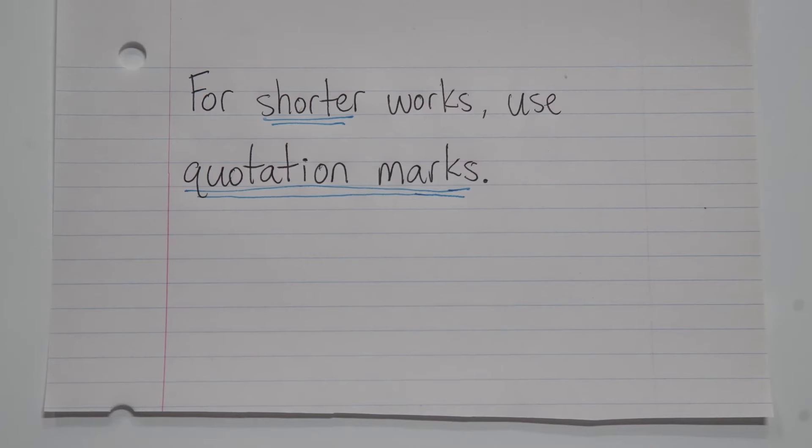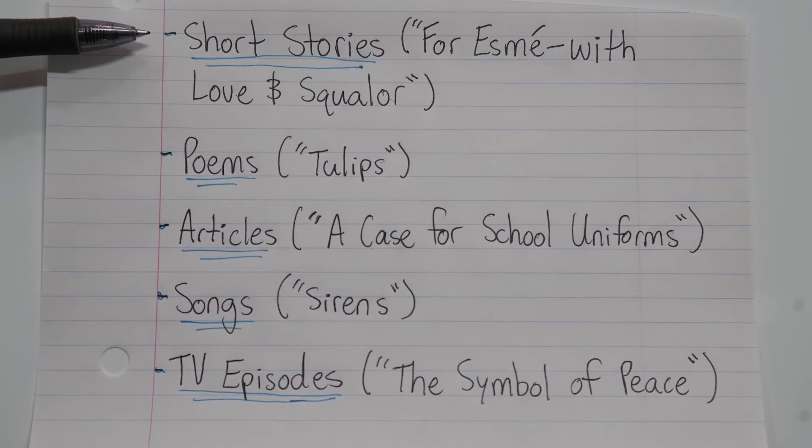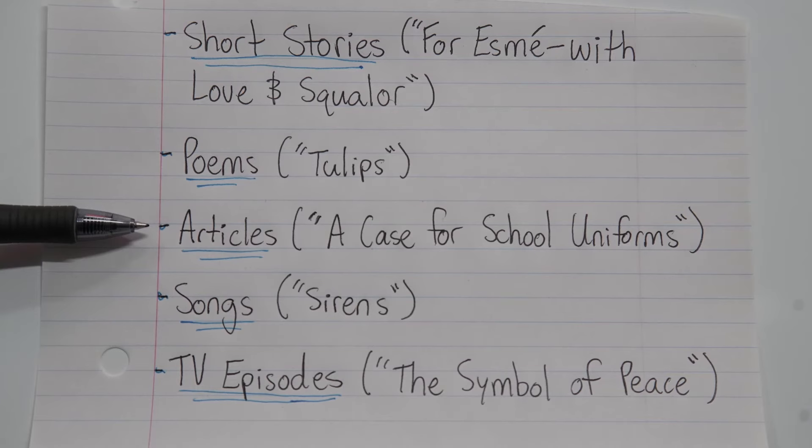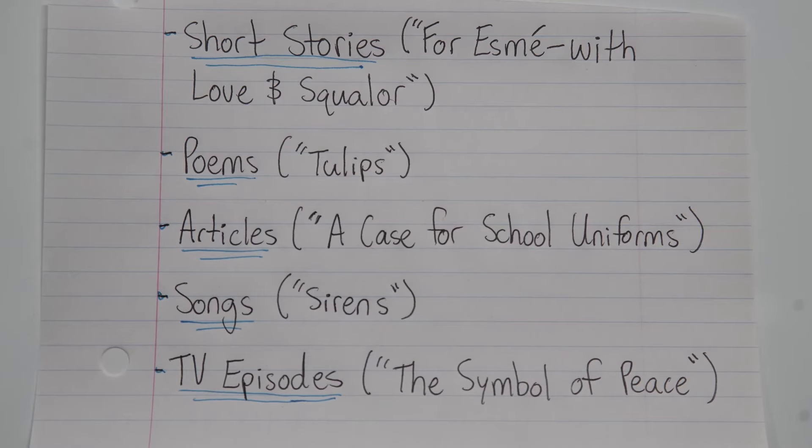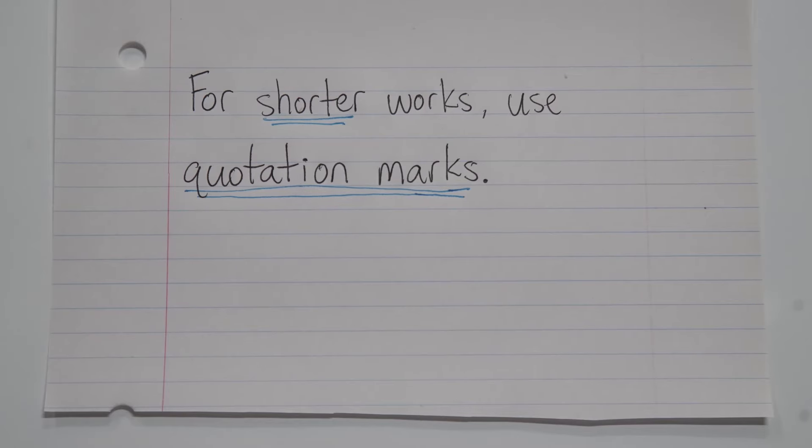Now when it comes to shorter works, you will want to use quotation marks in both typing and handwriting. Shorter works would include things like short stories, poems, articles, songs, TV episodes, stuff like that. And again, these would be put in quotation marks regardless of whether you're typing or handwriting them.